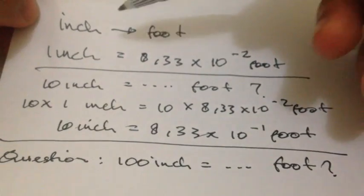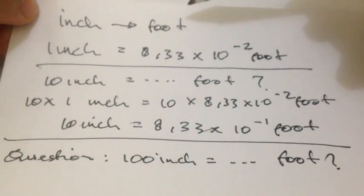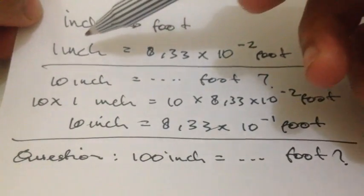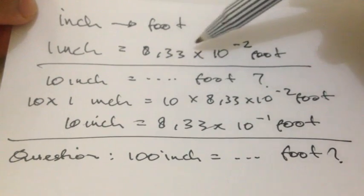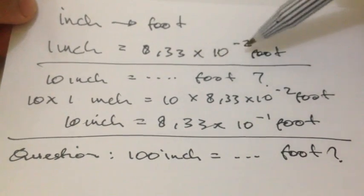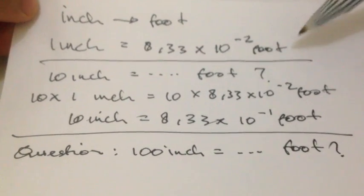Hello, what's going on everyone. Today we are going to convert inches into feet. The basic rule of this conversion is that 1 inch is equal to 8.33 multiply 10 power minus 2 feet.